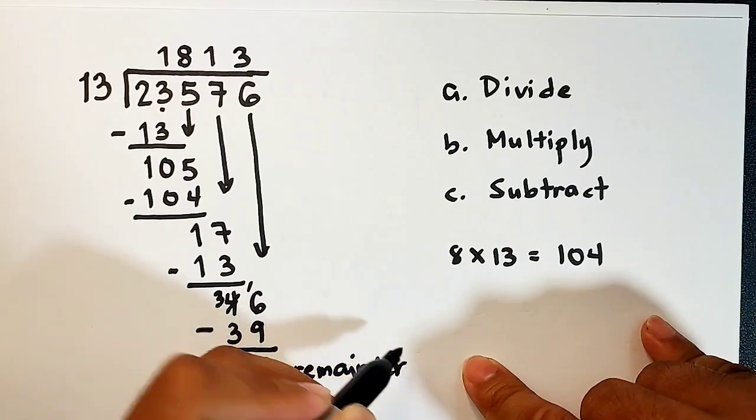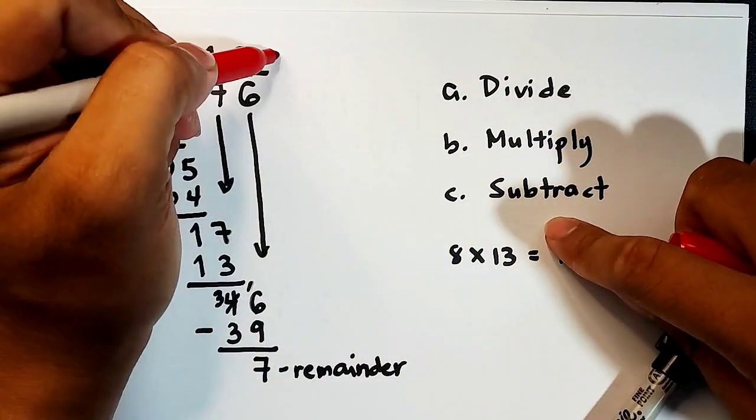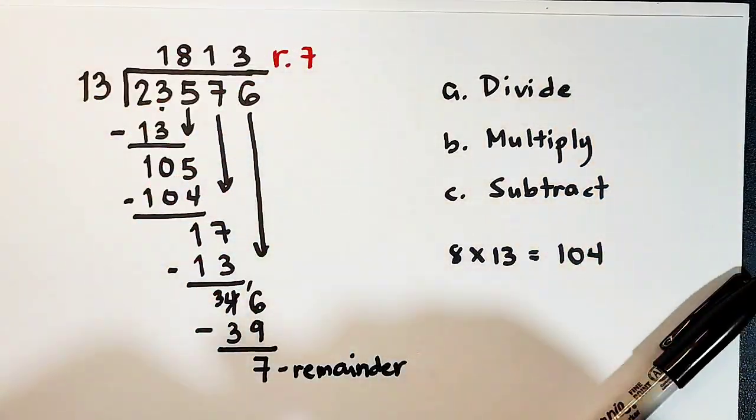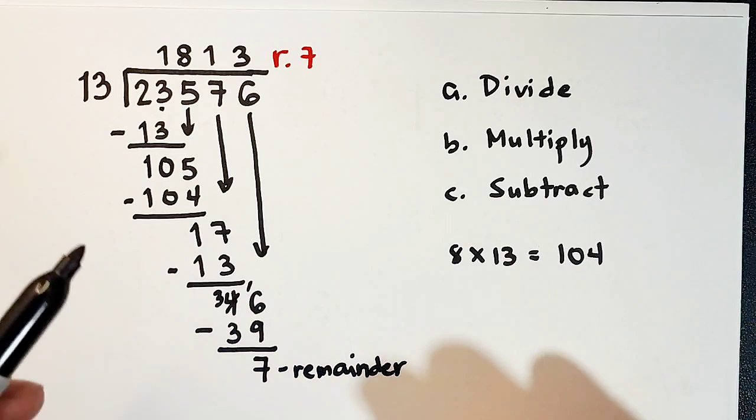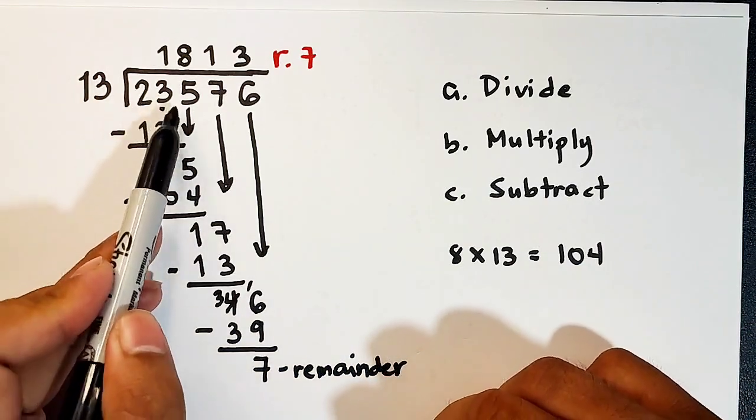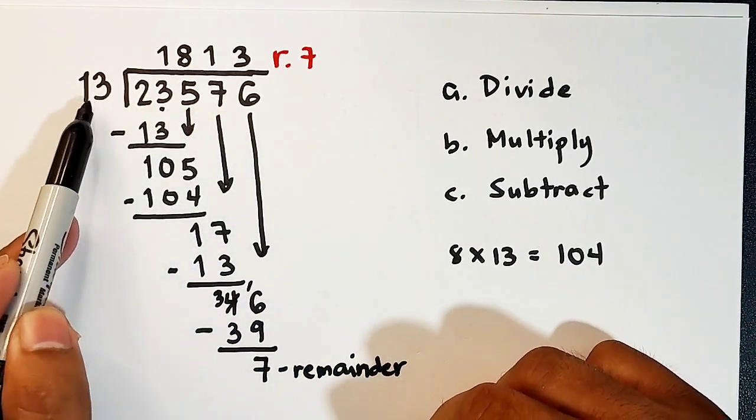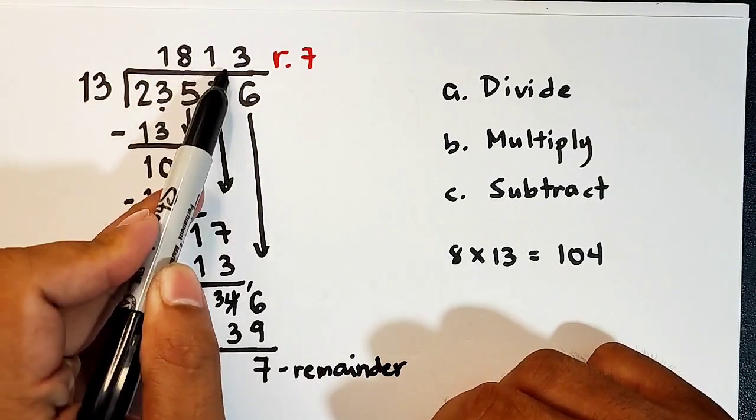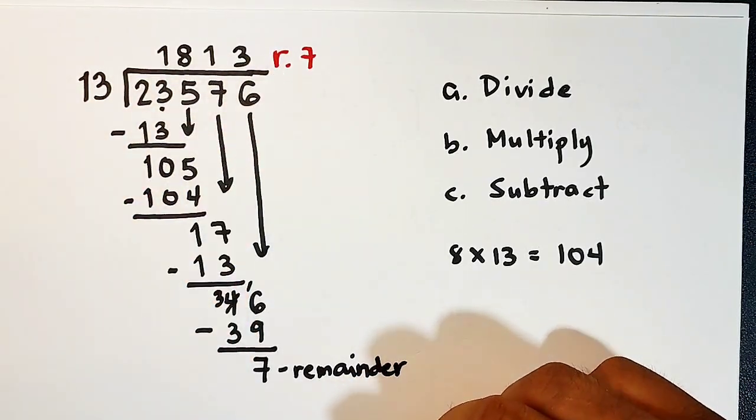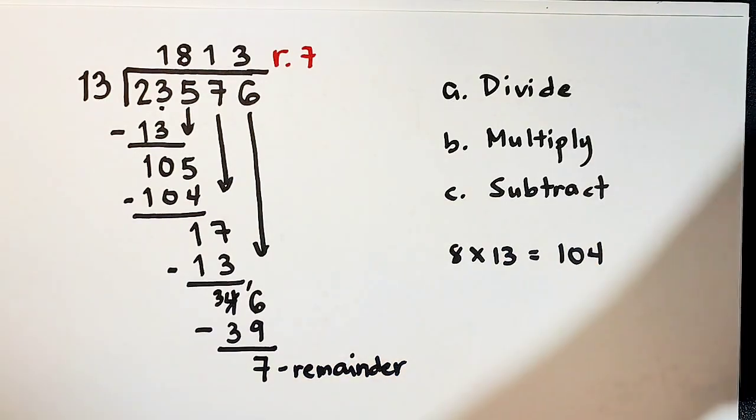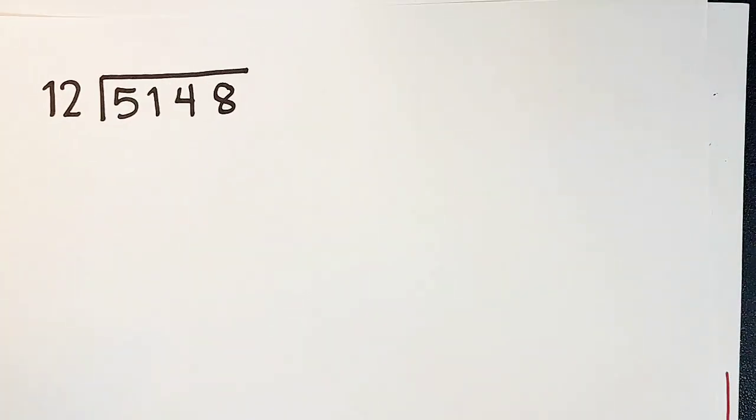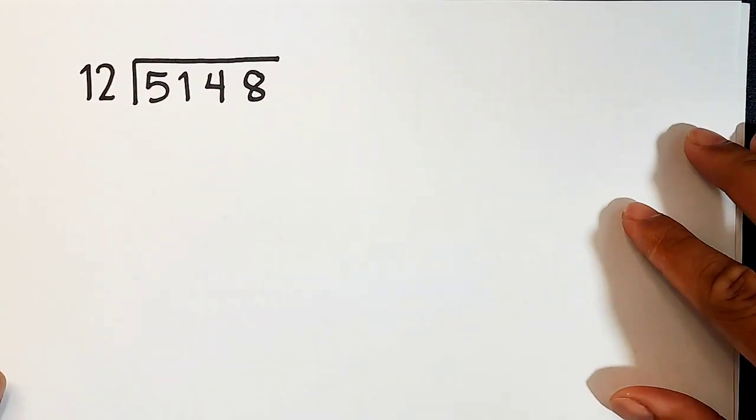Other people are writing R7, meaning that is your remainder. So to finalize our answer, 23,576 divided by 13 is equal to 1,813 and remainder 7.